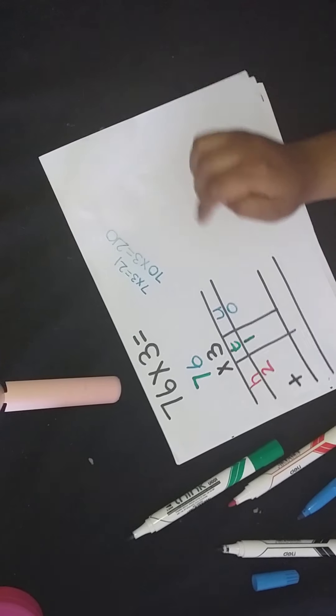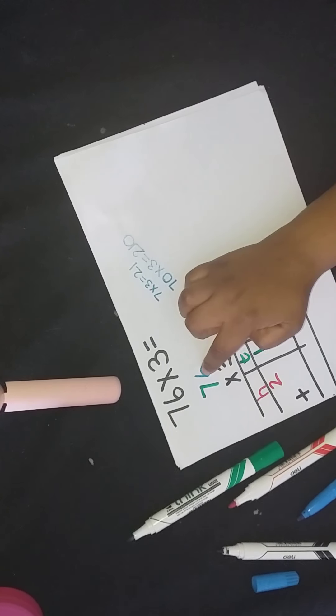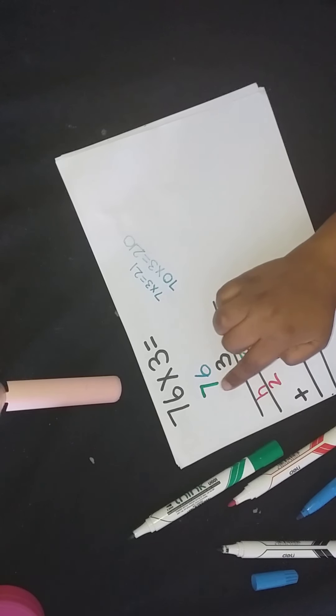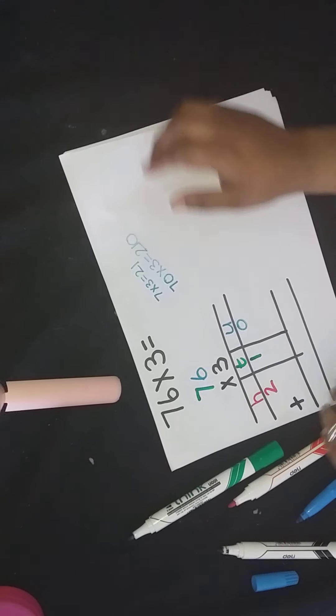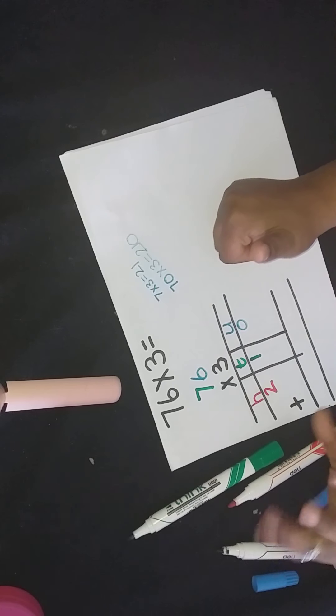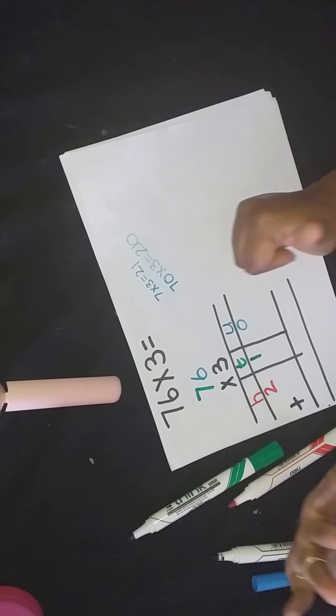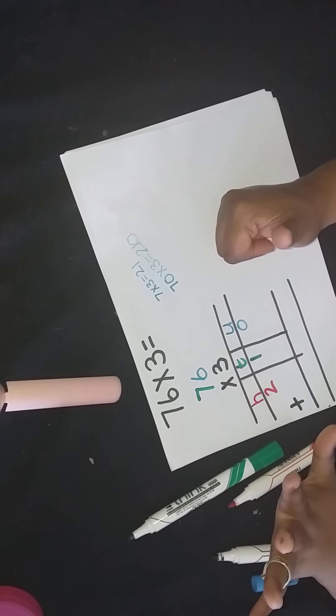What is six times 3? I did my tens. Now I'm going to do my units with my 3. Six times 3. You can keep three fingers and count in sixes, or I can keep six fingers and count in threes. I'm more comfortable with counting in threes. So I will be counting in threes.